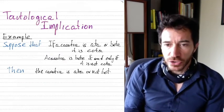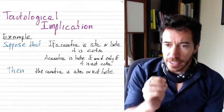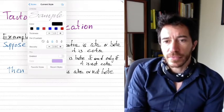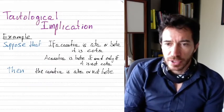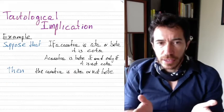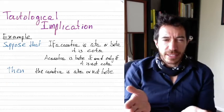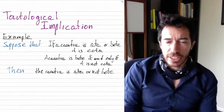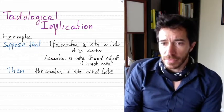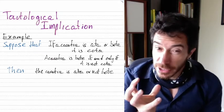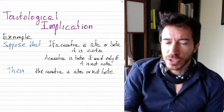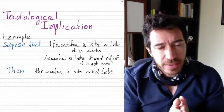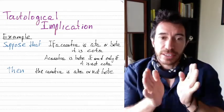Then our conclusion is that a cacatua is ata or not bote. So from those two assumptions, we get that conclusion. Does this make sense without even knowing what ata, bote, and cota are? Is the reasoning okay? Can we deduce the thesis from the hypothesis? Let's write it down in terms of sentential logic.